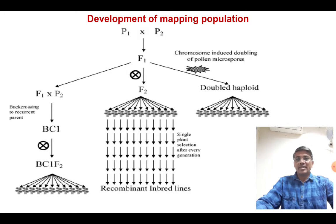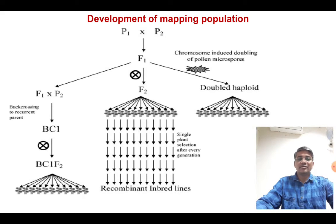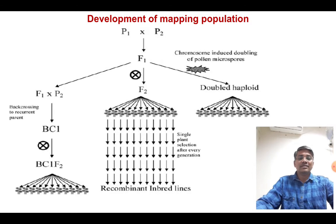Mapping of a particular gene starts with development of a mapping population. The mapping population may be a backcross population, a recombinant inbred line population, or a double haploid population as shown in this figure. In our work, we prefer using recombinant inbred line population.